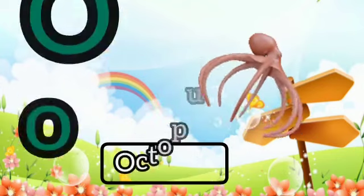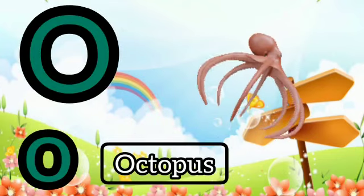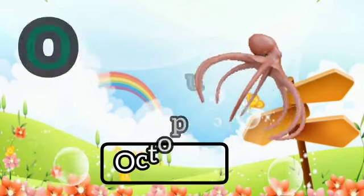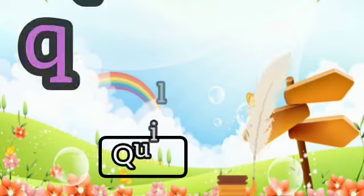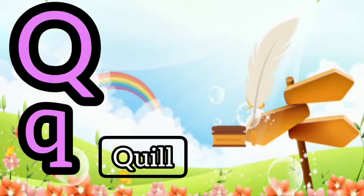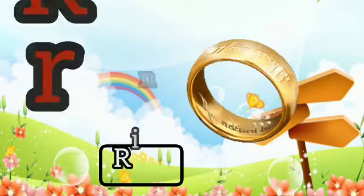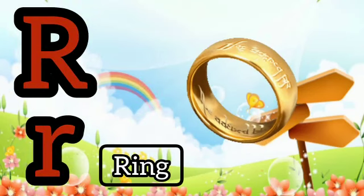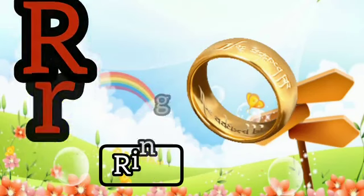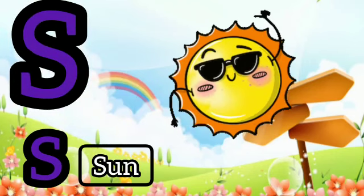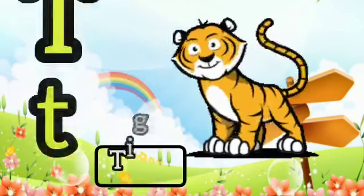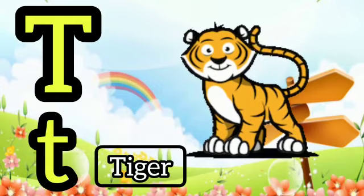O for octopus. P for pan. Q for queen. R for ring. S for sun. T for tiger.